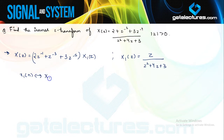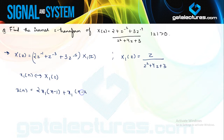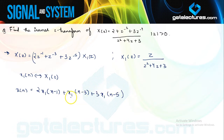If X1(N) is the inverse Z-transform of X1(Z), then X(N) is going to be 2·X1(N − 1) + X1(N − 3) + 3·X1(N − 5), applying the constant multipliers and time shifts corresponding to each power of Z. We start by performing inverse Z-transform for X1(Z) first.